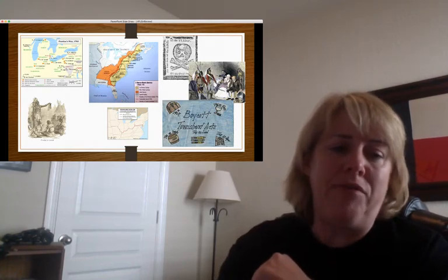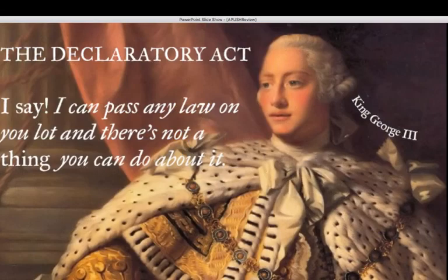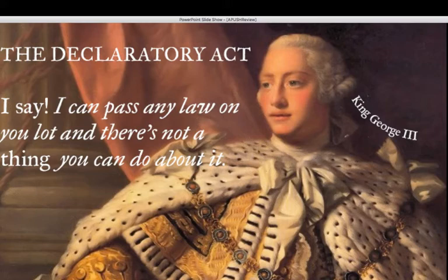After the Stamp Act, it was going to be repealed in 1766, but that was followed by the Declaratory Act. The Declaratory Act basically said England can pass any law they want because the colonies are the property of England, and the colonists can't do anything about it — you just have to live with it.